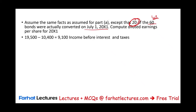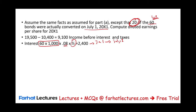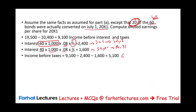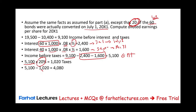Revenue minus expenses equals EBIT of $9,100. For the first half of the year, all 60 bonds are outstanding: 60 times $1,000 times 8% times 1/2 equals $2,400 of interest. From July 1st, only 40 bonds remain: 40 times $1,000 times 8% times 1/2 equals $1,600. Earnings before taxes: $9,100 minus $4,000 equals $5,100. Taxes: $5,100 times 20% equals $1,020. Net income: $4,080. Basic EPS: $4,080 divided by 2,000.